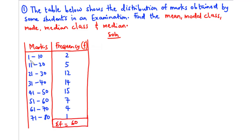For example, for the interval 1 to 10 we have 2 occurrences, but we don't know the exact values within this interval. So because of that, we can't find the exact mean. What we need to do is find the midpoint — those will be the x values.